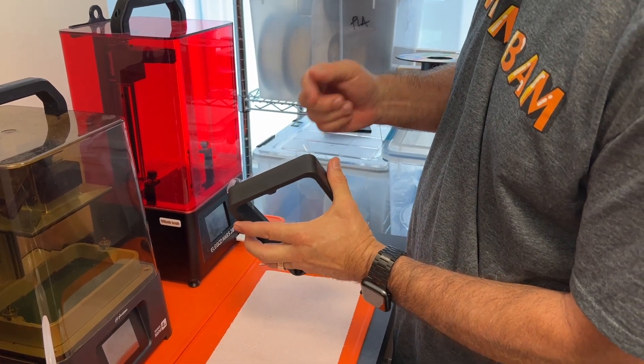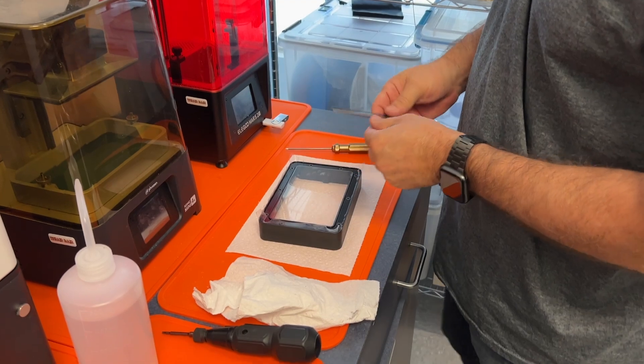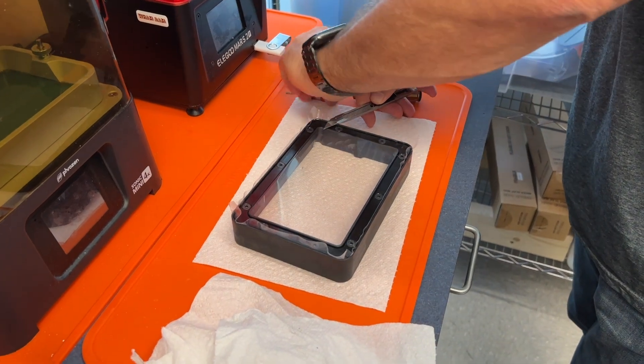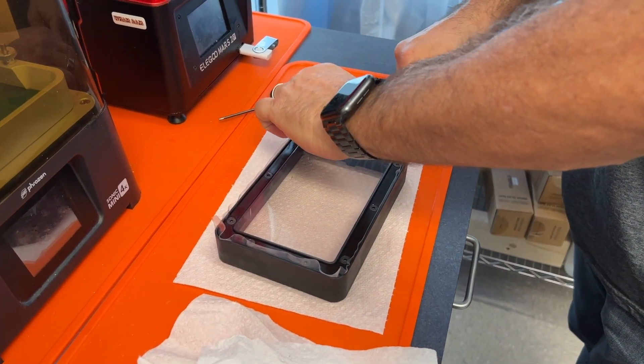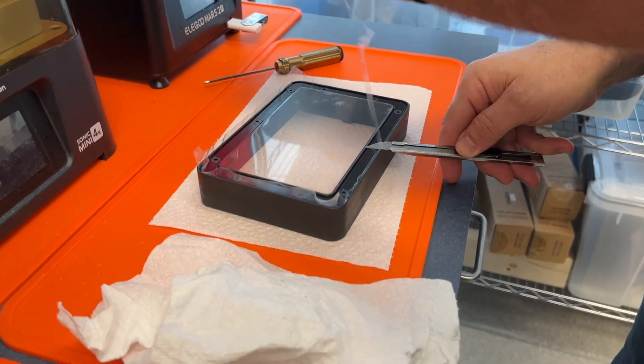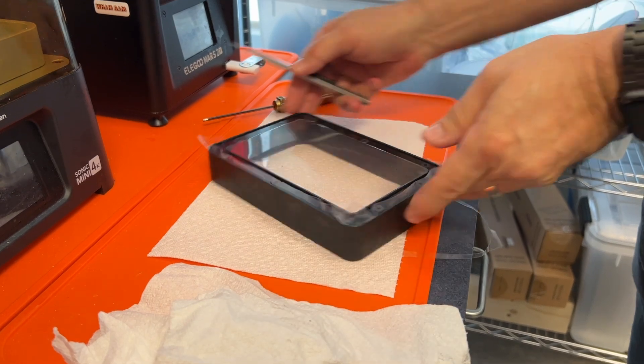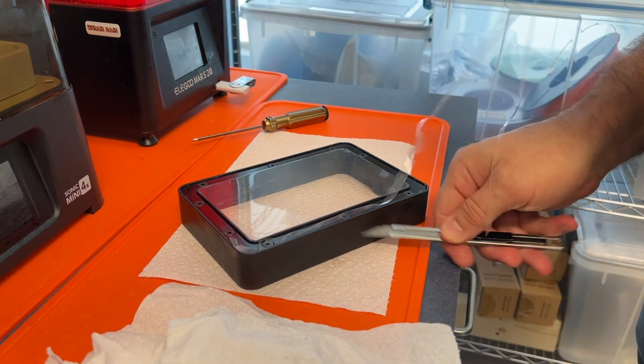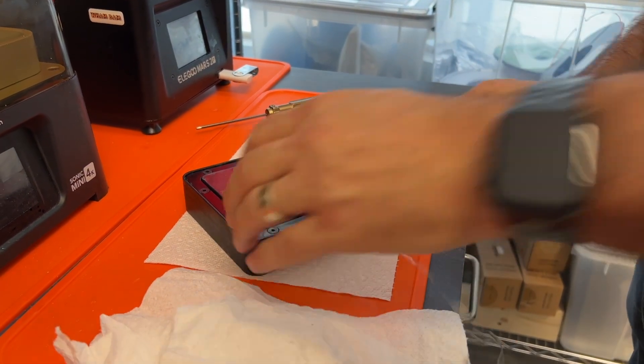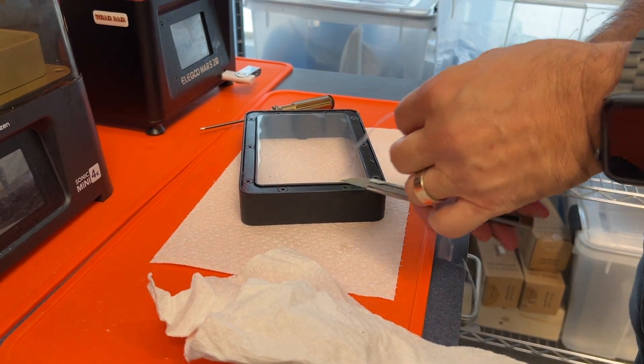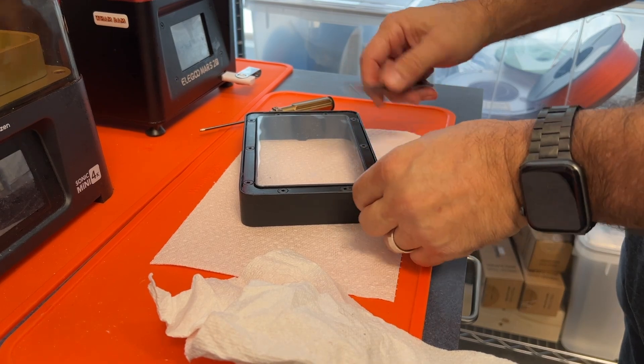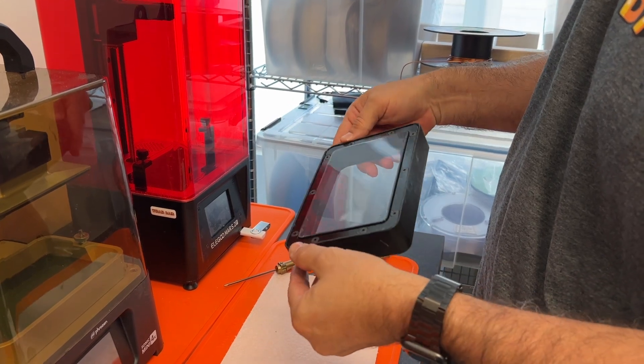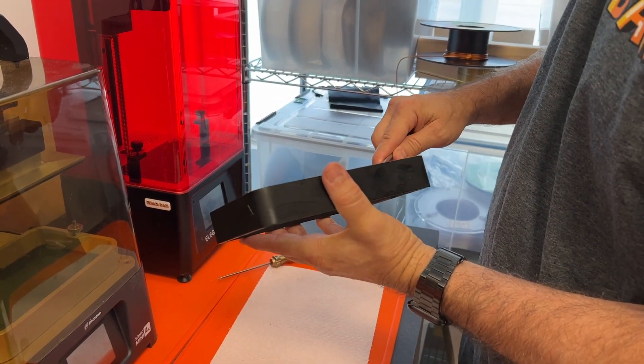So the last step is to trim this excess material with a very sharp exacto blade or a razor blade. Be careful of your hands. Always orient your hand behind the blade. You don't want to cut your hands by accident on this one. I'm just kind of following it around as I go. And then give it a careful inspection that we don't have any excess FEP sticking up. If you do, you could always go back in and trim a little bit.